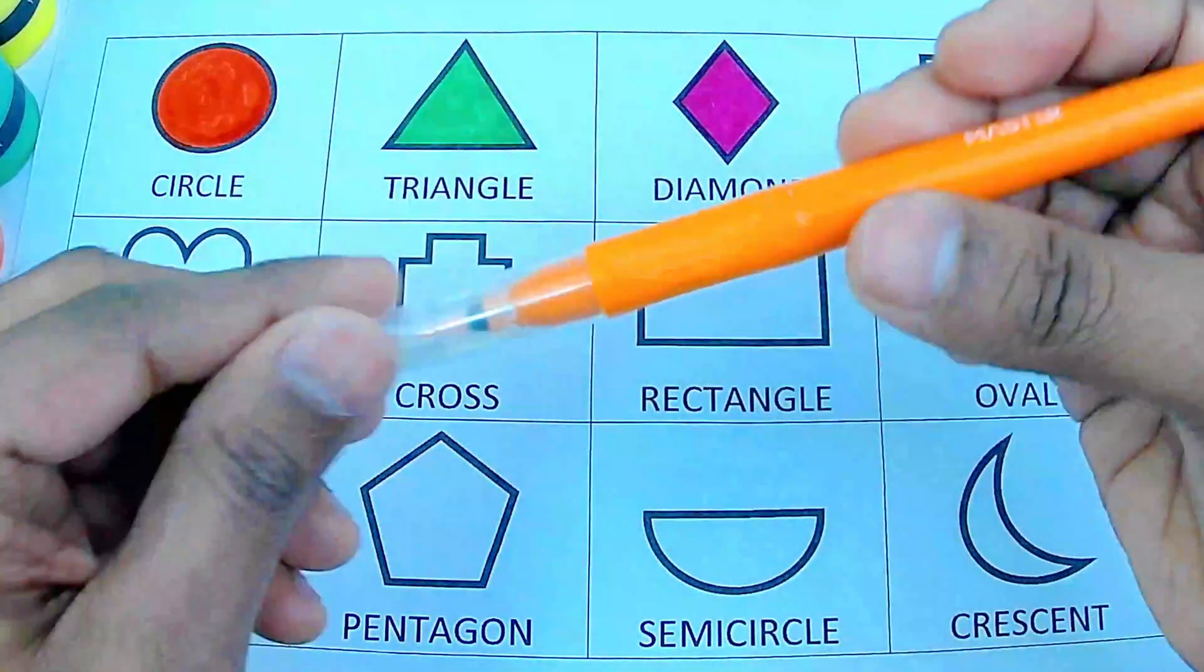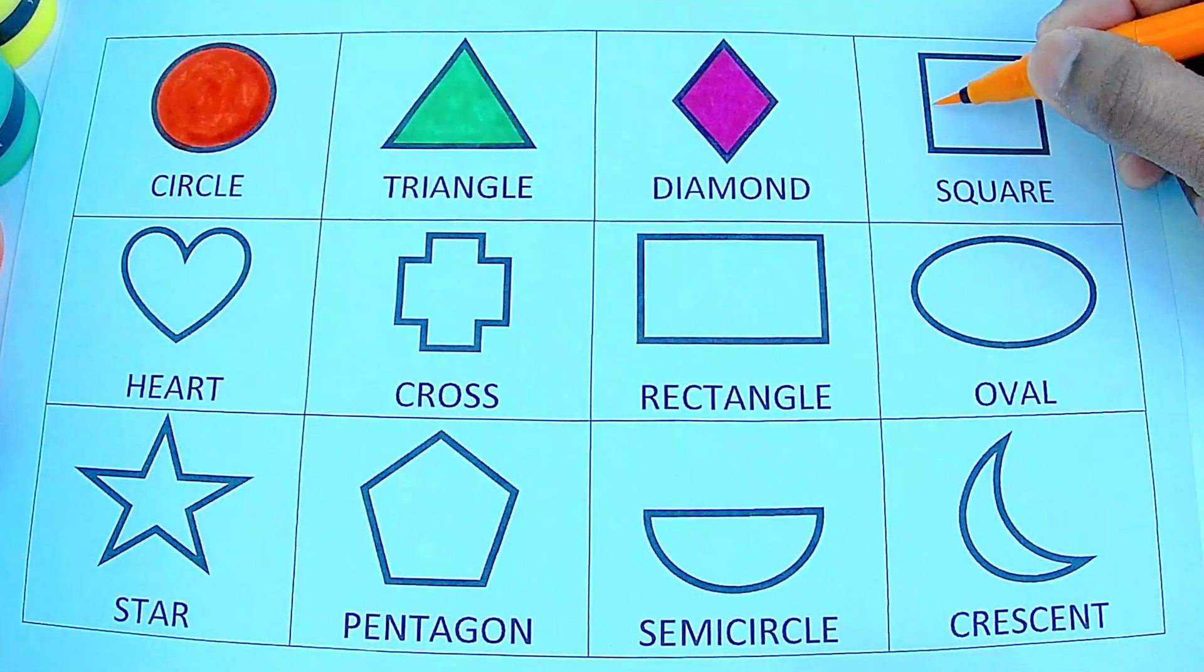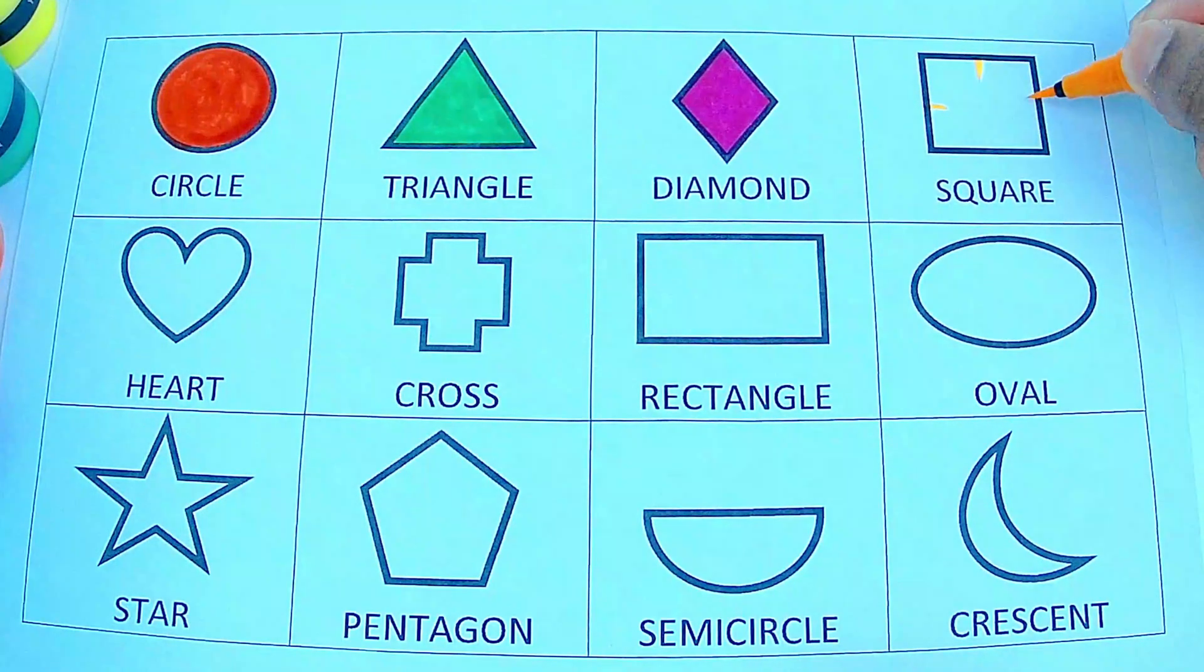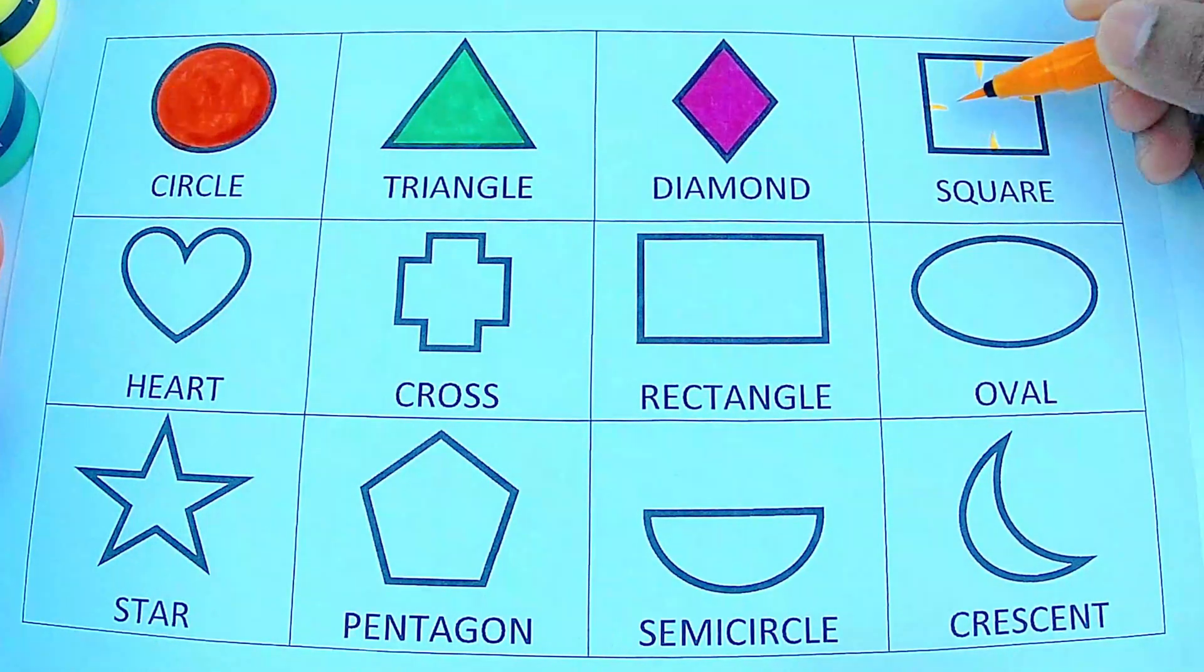Orange color square. A square has four sides. One, two, three, four. All the sides are equal in a square. Orange square.